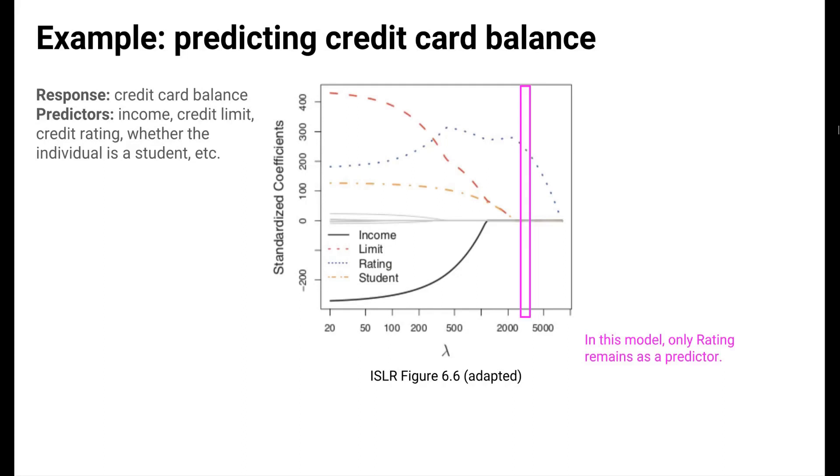A vertical slice of this plot corresponds to one particular model. In the slice highlighted here, all coefficients are zero except the one for the credit rating variable. This indicates that the model chosen for this value of lambda has only rating as a predictor. How do we know which slice to choose, that is which lambda to pick? For each lambda we try, we should estimate the true error rate on new data using cross-validation, and we'll pick the lambda that gives us the lowest estimated true error rate on new data.